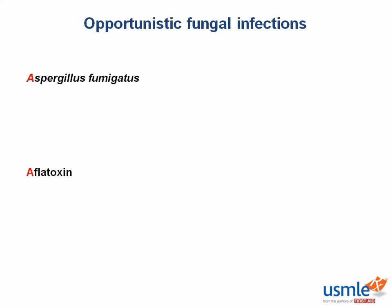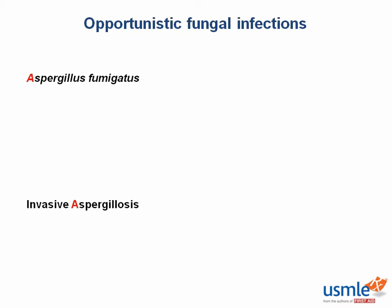Some Aspergillus species can produce aflatoxins, which have been linked to hepatocellular carcinoma (HCC). These aflatoxins are often found in moldy peanuts. Finally, from the lung parenchyma, Aspergillus can invade the bloodstream and cause invasive aspergillosis, which causes blood vessel occlusion and pulmonary infarction. Other organs can also be affected, including the liver and kidneys.